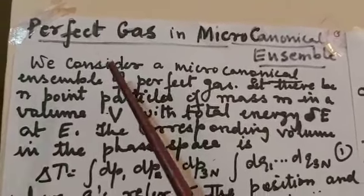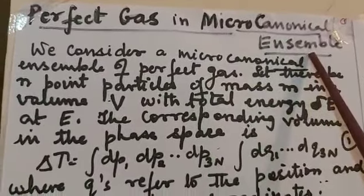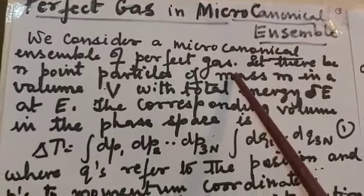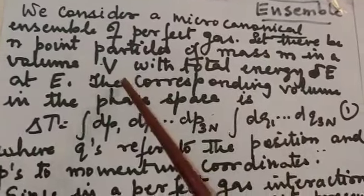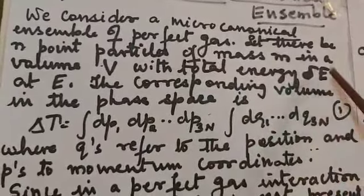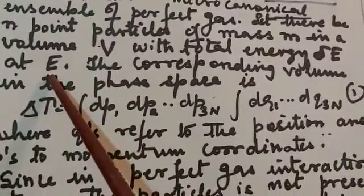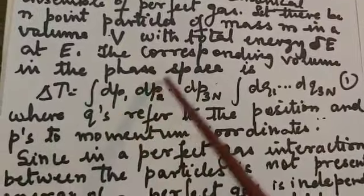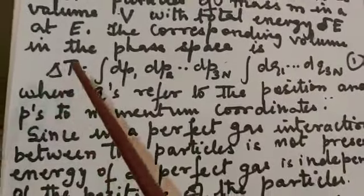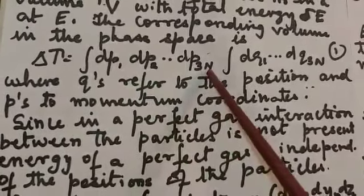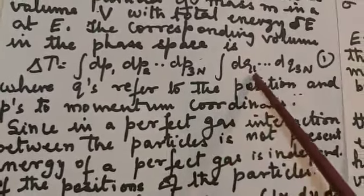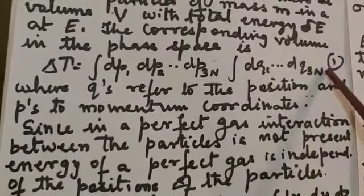Let us now do perfect gas in a microcanonical ensemble. We consider a microcanonical ensemble of perfect gas, and let there be N point particles of mass m, with volume V and total energy in the range E minus delta E to E. The corresponding volume in the phase space is: delta tau = integral dp1 dp2 ... dp3N integral dq1 ... dq3N. This is equation 1.